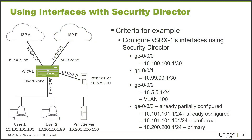Here is our example topology. VSRX1 is in the middle and will be the device we configure using Security Director. VSRX1 is connected to two ISPs — ISPA and ISPB — via GigE0/0/0 and GigE0/0/1 respectively, to a web server via GigE0/0/2, and to the users zone via GigE0/0/3.